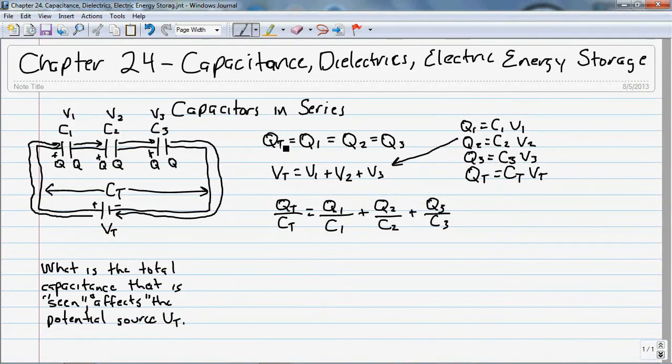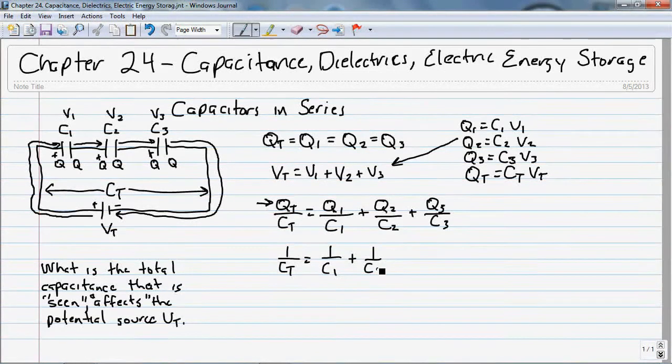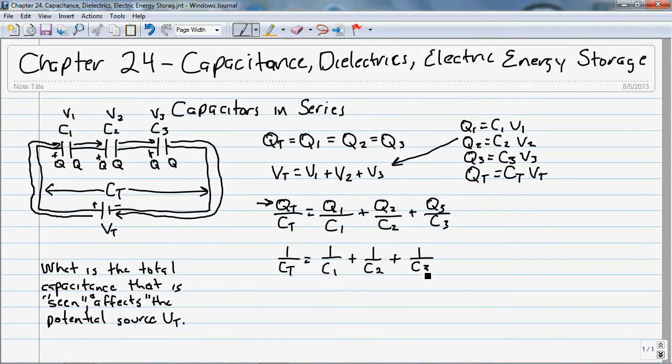And now, all of the Q's are equal. So, I can factor out all of the Q's and I get 1 over CT is equal to 1 over C1 plus 1 over C2 plus 1 over C3.